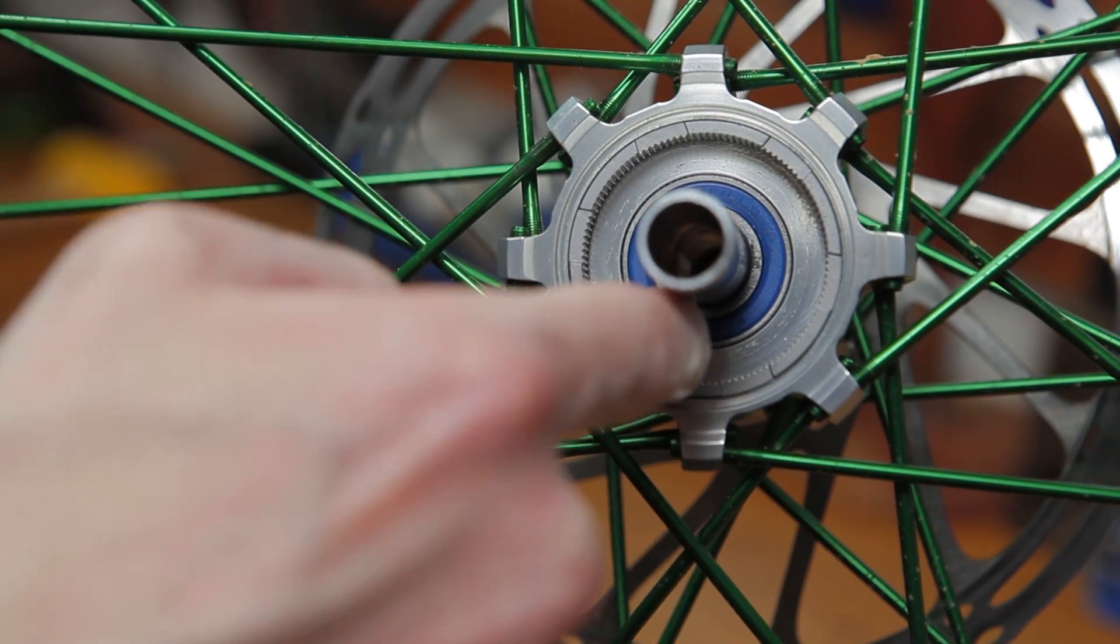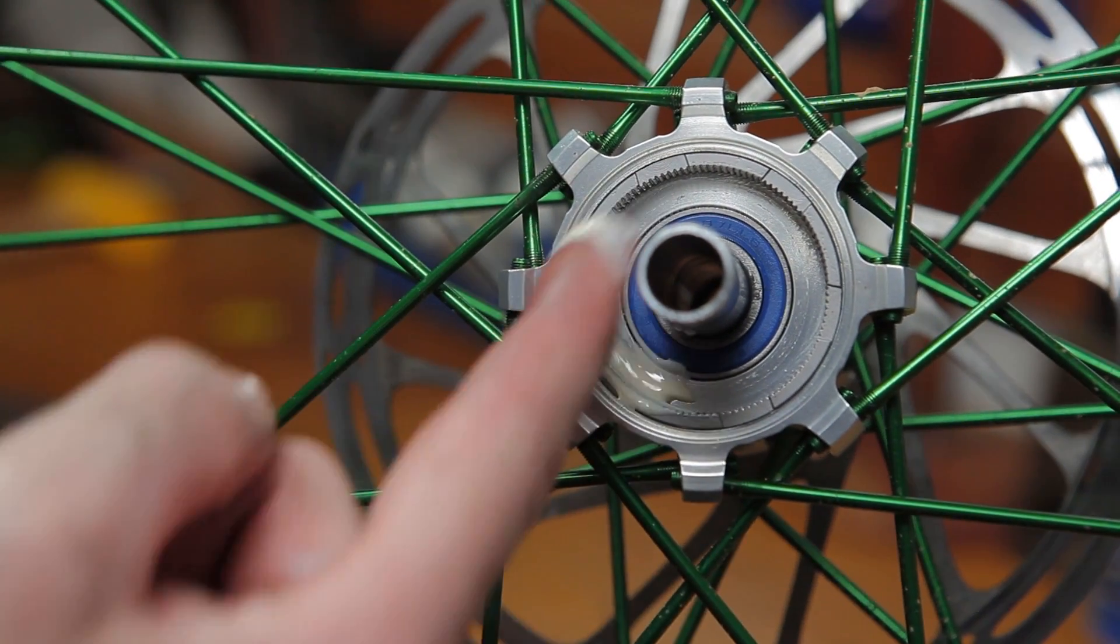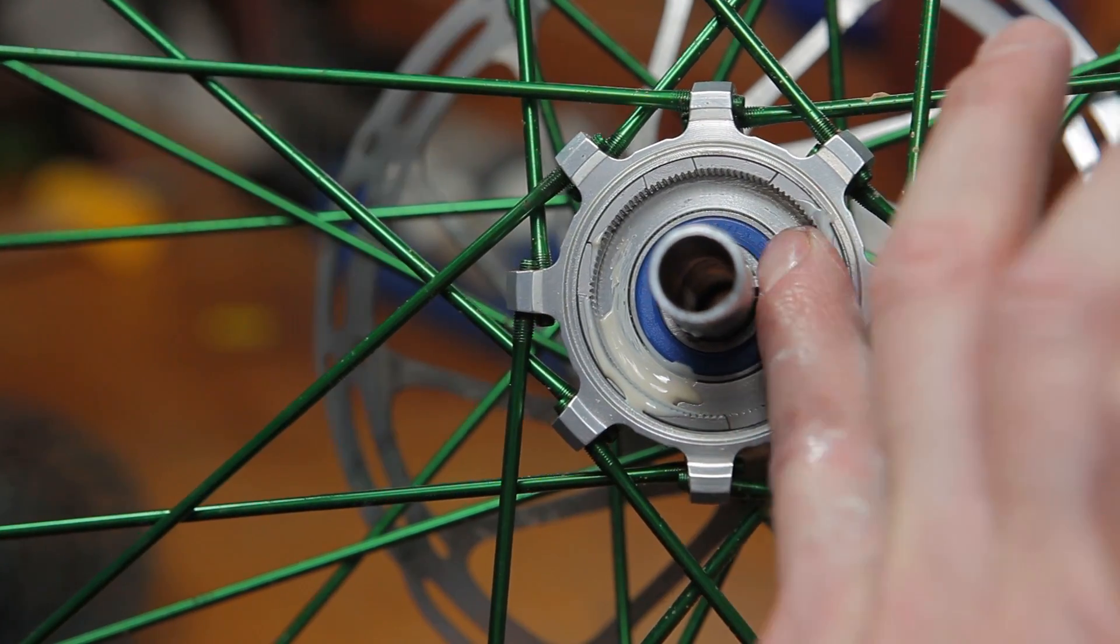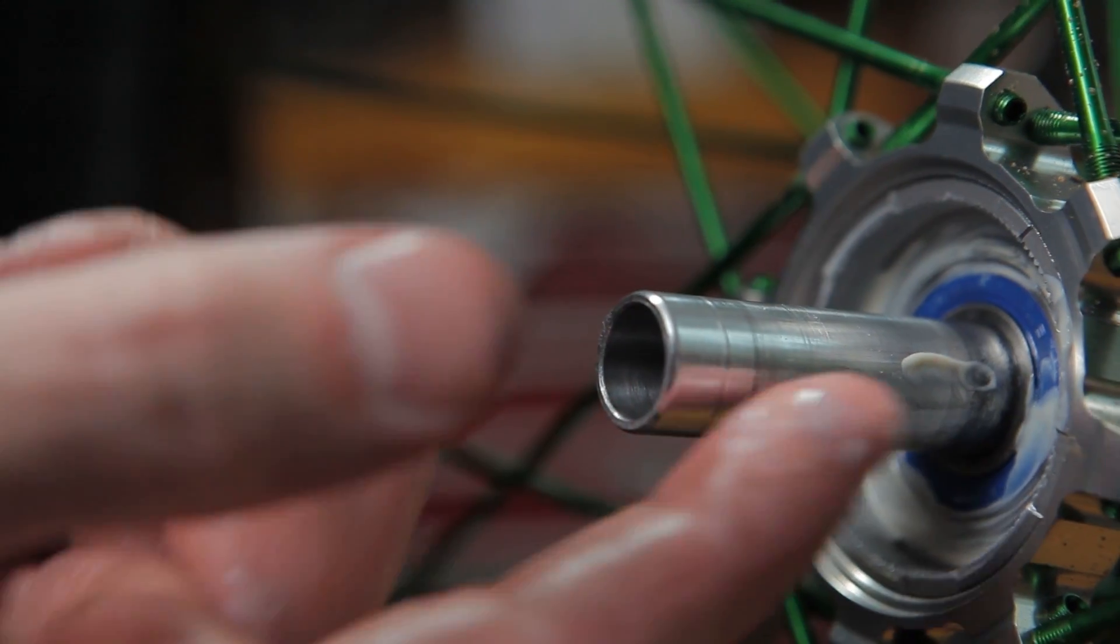If you want your freehub to be as quiet as possible, you can also lubricate the drive ring. With a glob of freehub grease on your finger, just spread it evenly around the drive ring.